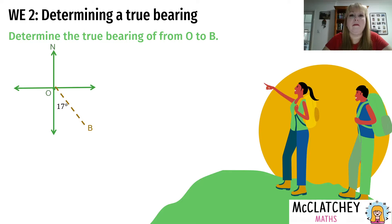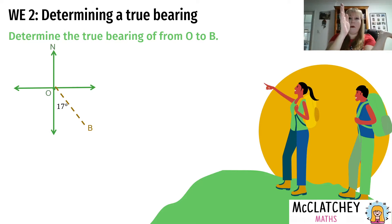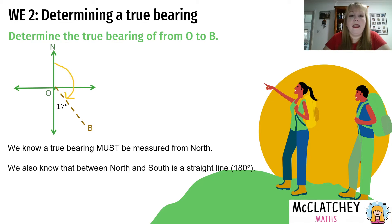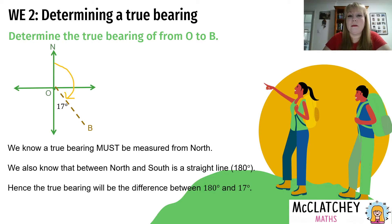Next, we're looking from O out to point B. We've got 17 degrees, but again that's not inside our bearing — if we look north and go around through east and then to point B, that 17 degrees sits outside the bearing. We know north to south is a straight line, so 180 degrees. We subtract: 180 minus 17 gives us a true bearing of 163 degrees true.